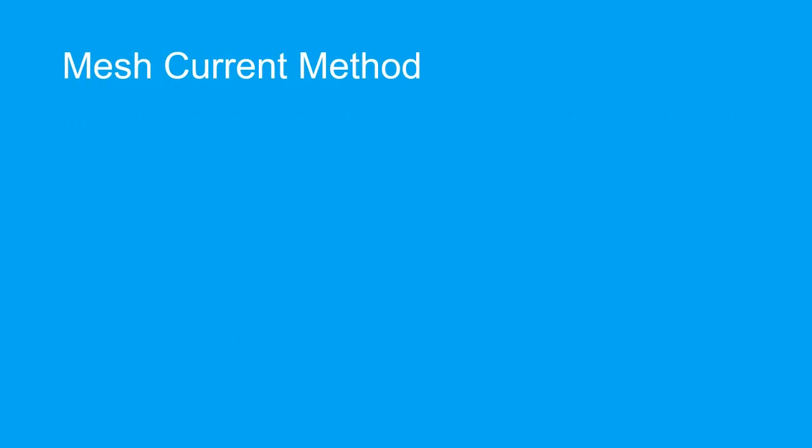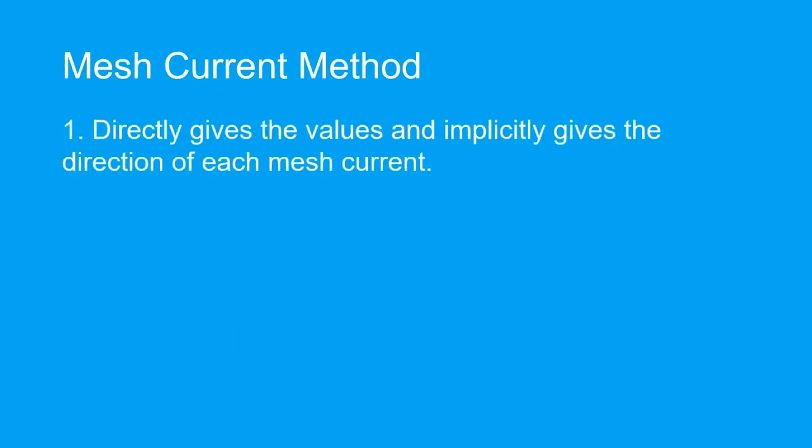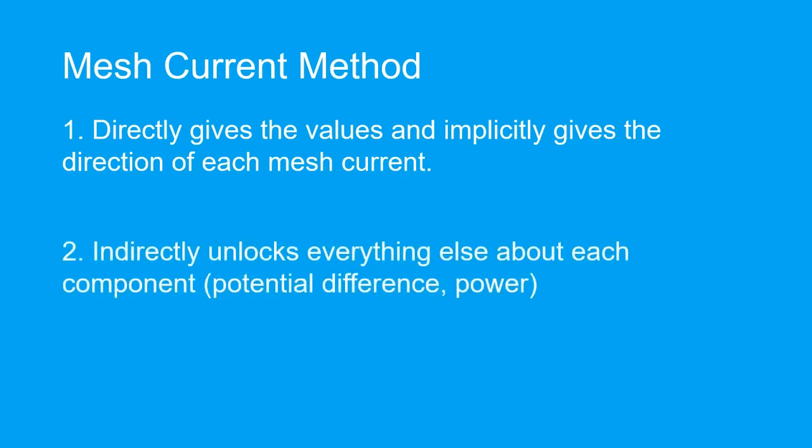Now we can talk about the mesh current method itself. This circuit analysis method directly gives us the values and implicitly the directions of each mesh current. The currents found allow us to calculate the currents through each device, so we know the potential difference across each device and the power generated or dissipated by each device.